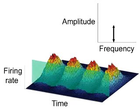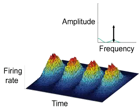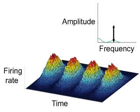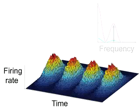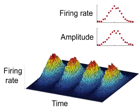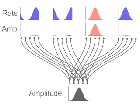In regions of the network where the firing rates are low, the oscillation amplitude is also small, and in regions of the network where the firing rate is high, the amplitude is also large. Therefore, the spatial pattern of firing rate oscillation amplitude reproduces the spatial pattern of firing rates and can be decoded like a conventional rate code to recover the encoded stimulus.